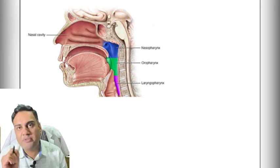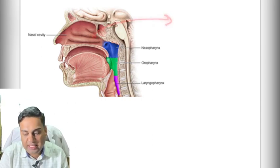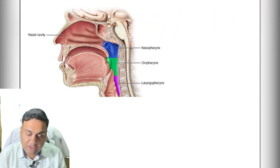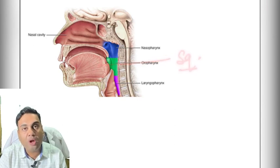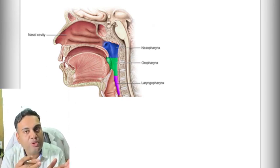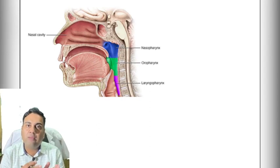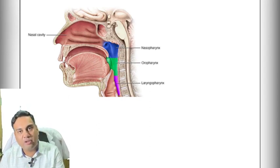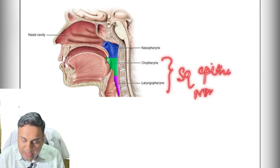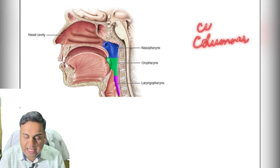An important point before going into the details of each part is the lining epithelium. The nasal lining epithelium is ciliated columnar mucosa, while the oral cavity has non-keratinizing squamous epithelium. The nasal or respiratory mucosa — ciliated columnar epithelium — continues into the nasopharynx, and the squamous epithelium of the oral cavity continues into the oropharynx and laryngopharynx, because the larynx is also lined by squamous epithelium.